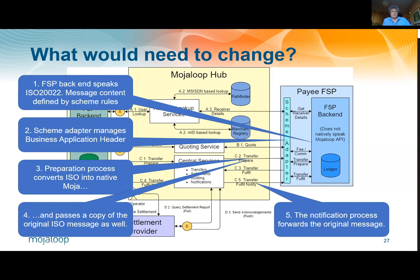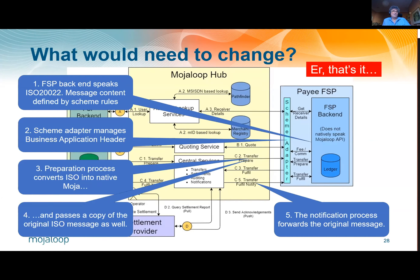Finally, the notification process forwards the original message. So after step three, we have a native MojoLoop message which can be processed in exactly the same way as it is now. All of the stuff inside the central service — quoting service and all those aspects of the system — won't need to be changed at all. And we think that's all we would need to do to generate a working ISO-compliant version of MojoLoop, at least ISO compliant in the sense of consuming ISO messages — because sometimes people mean a system that uses ISO messages all the way down, which this clearly doesn't.